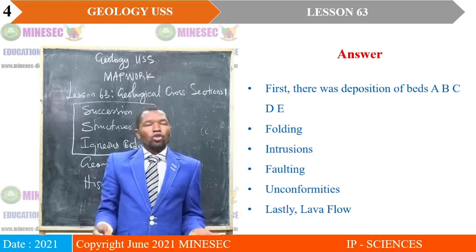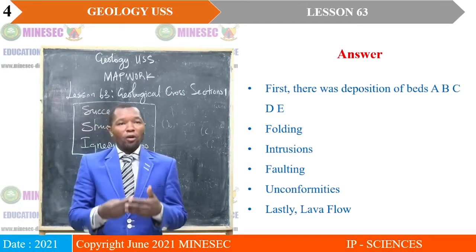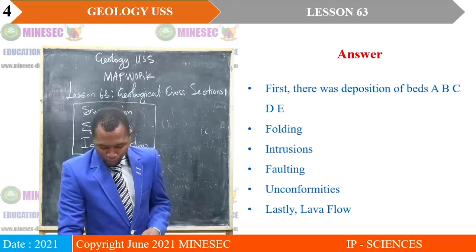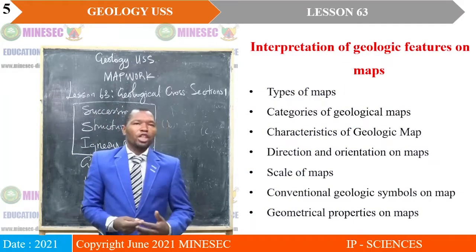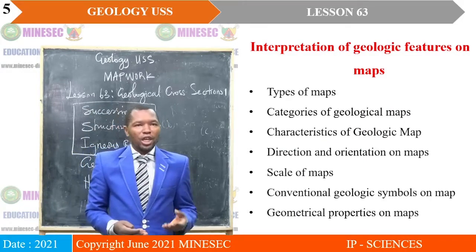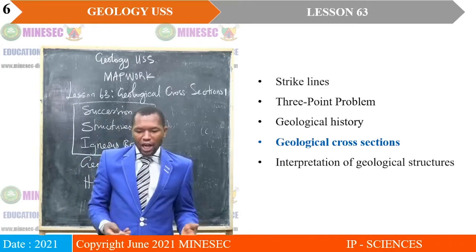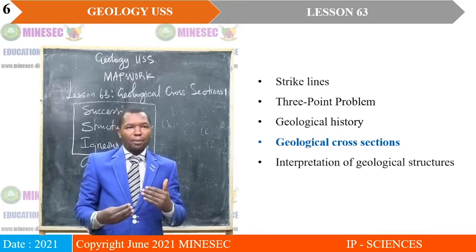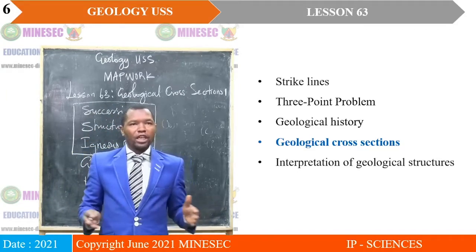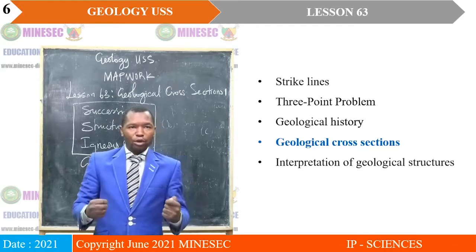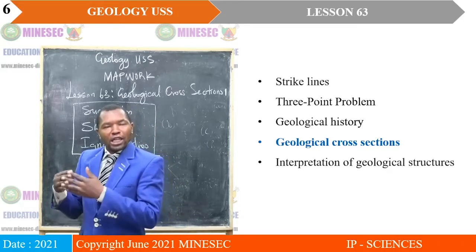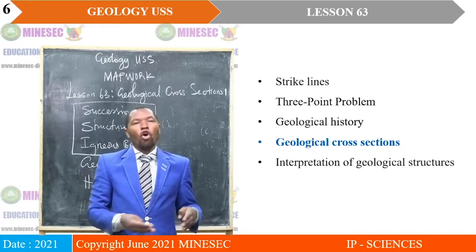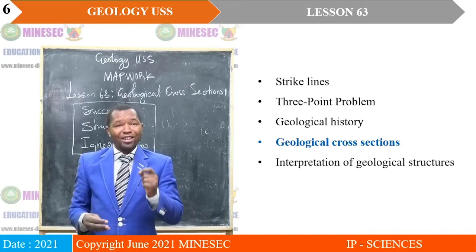That is the geologic interpretation of the history of the way events were laid down in the area represented by this map. We are still on interpretation of geological features on maps. We have seen from types of maps right up to strike line, three-point problems, and geological history. Now, from history, we are already interpreting, and we will go ahead to do more interpretation using geological cross-sections, handling cross-sections for all the structures one after the other.